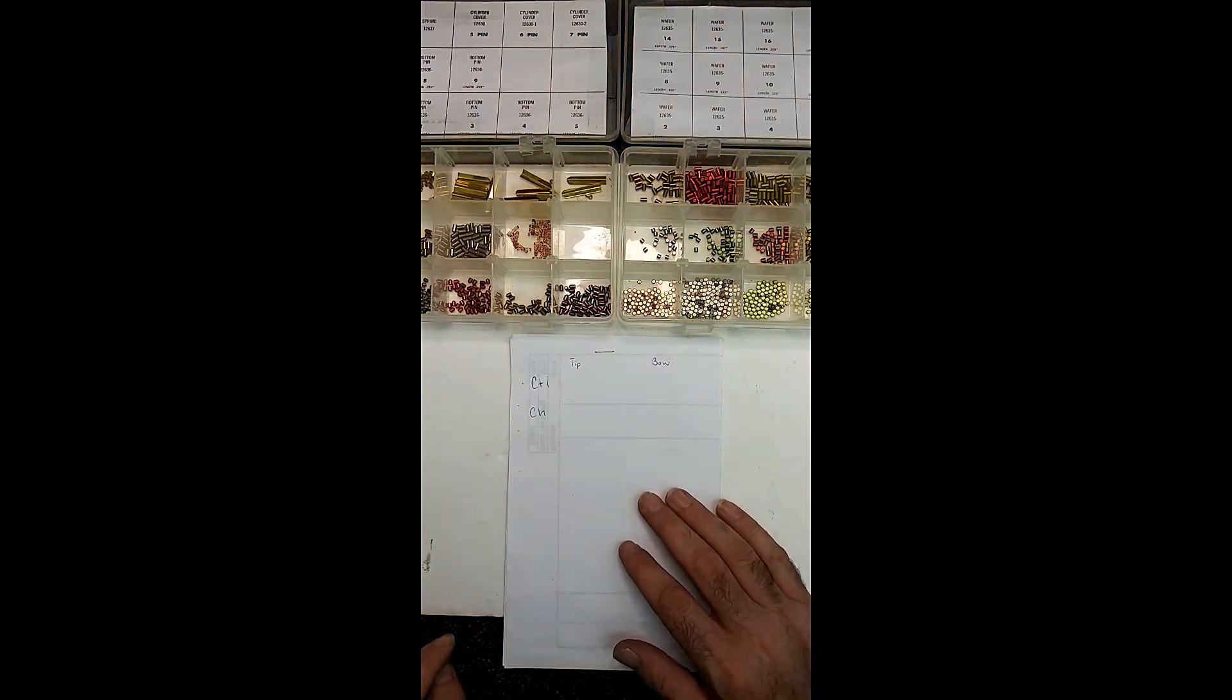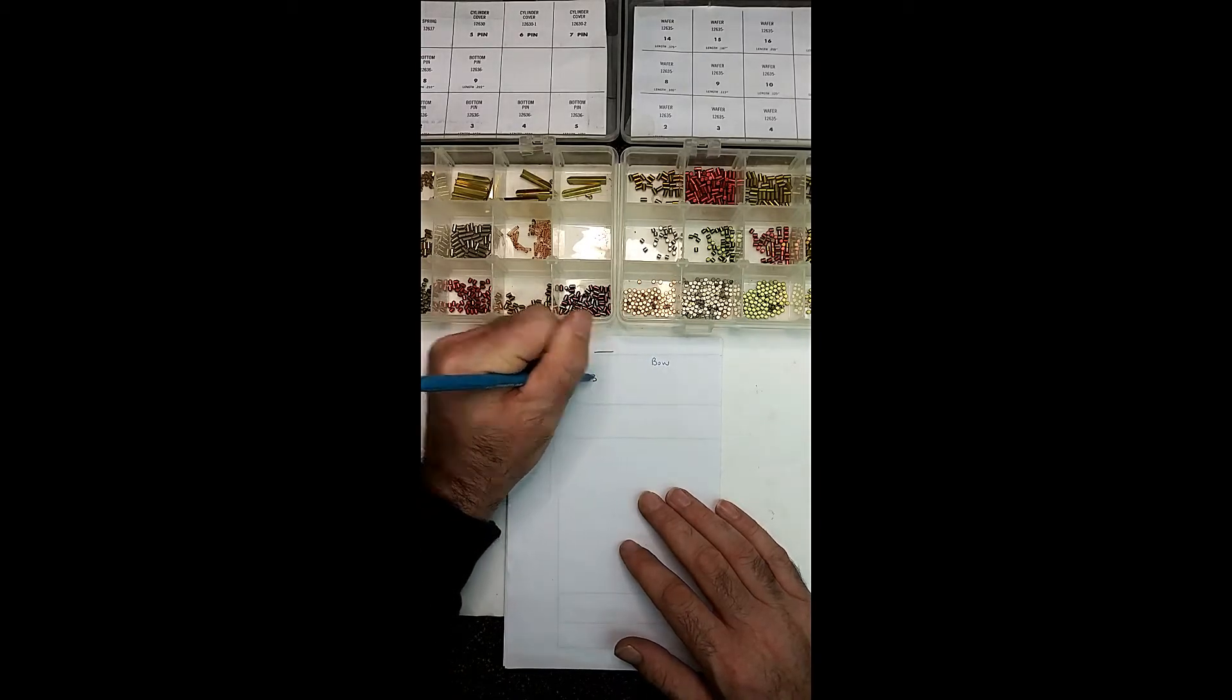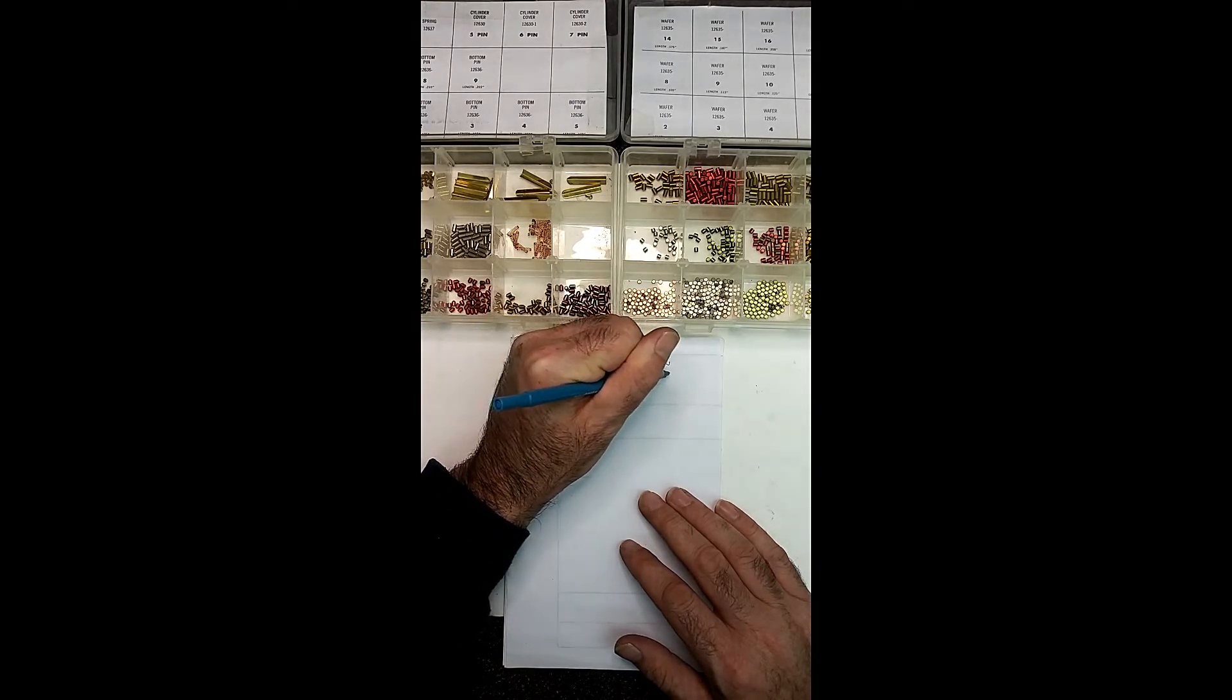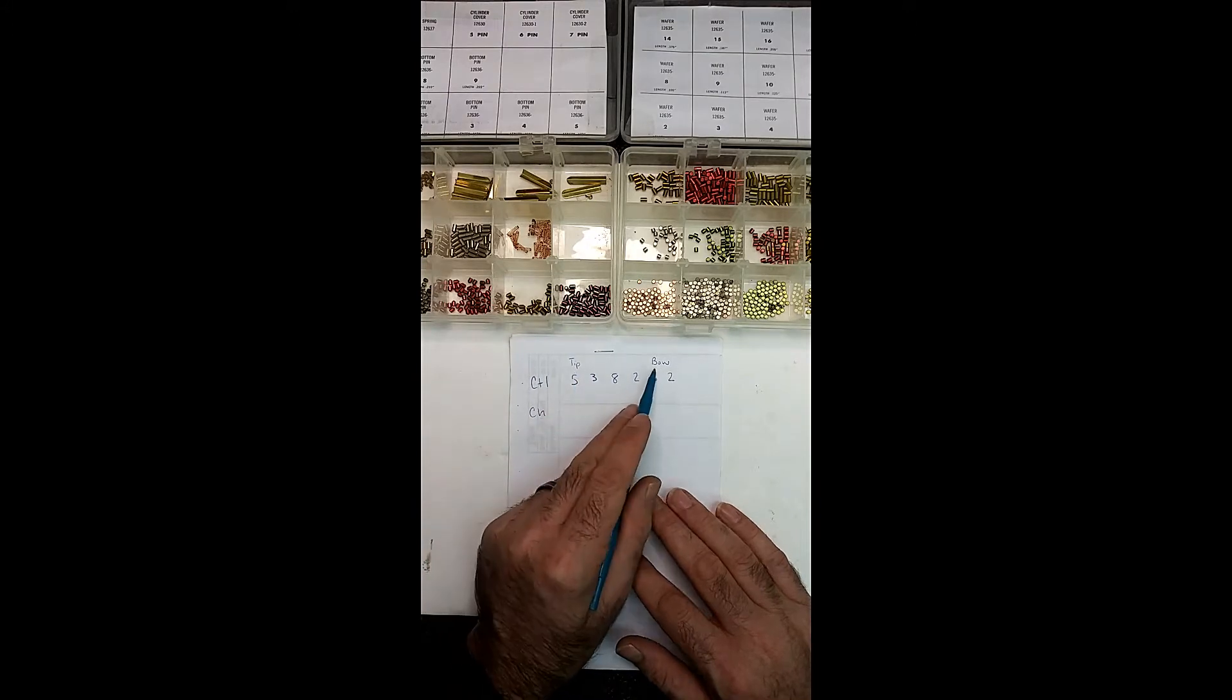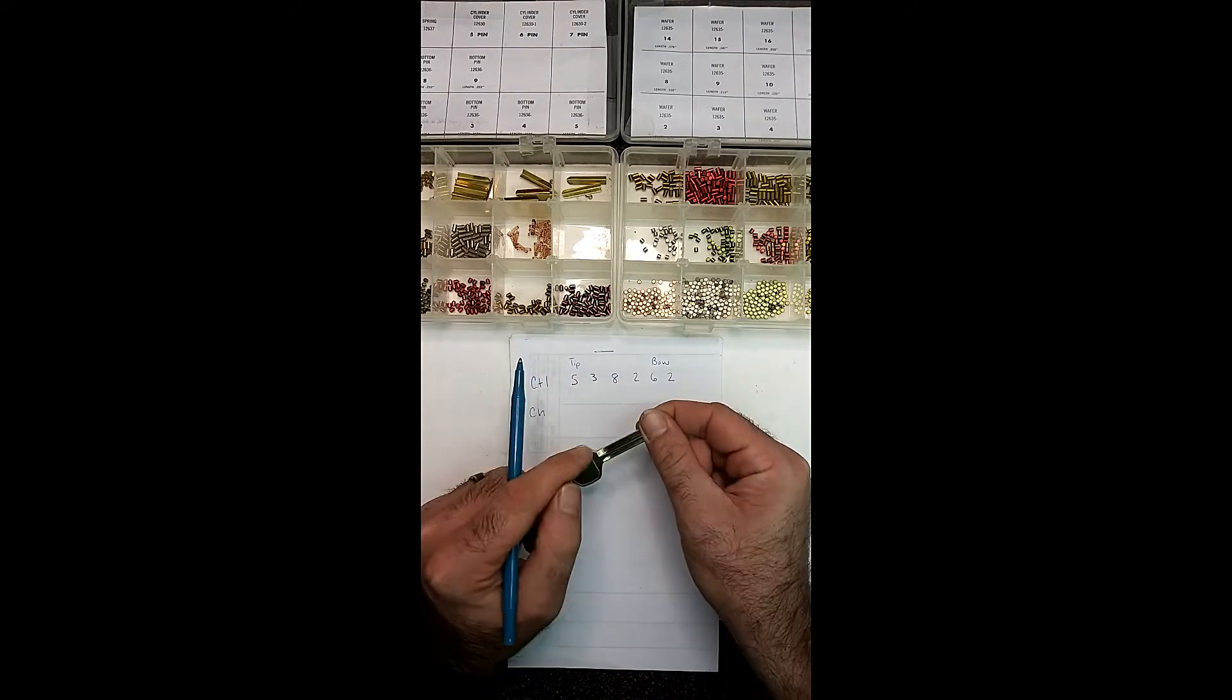In these situations, I really just pull numbers out of my butt, just for the sake of randomness. So in this case, let's do five, three, eight, two, six, two. As you notice up here, I have it listed tip to bow. Now that is referring to the tip here and the bow here.